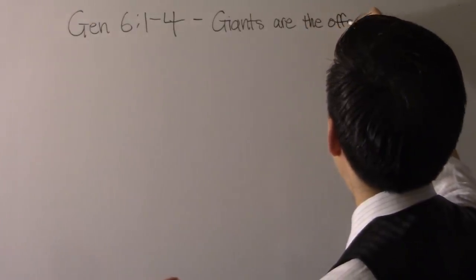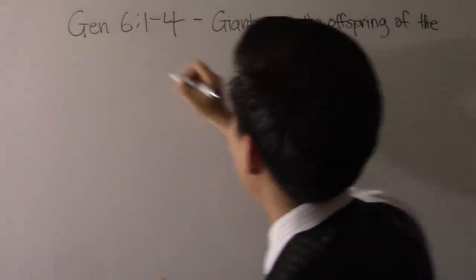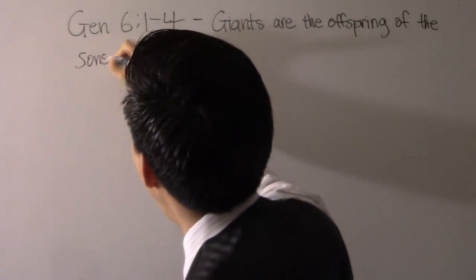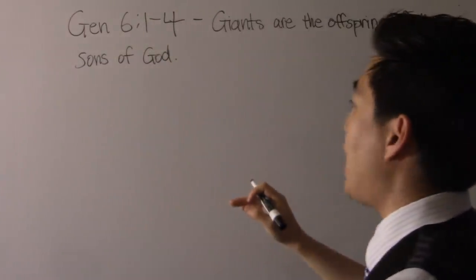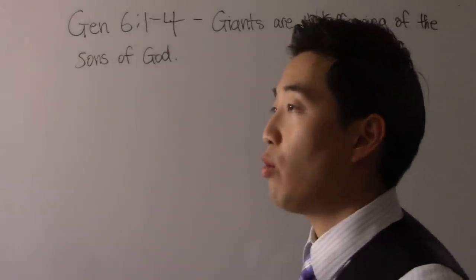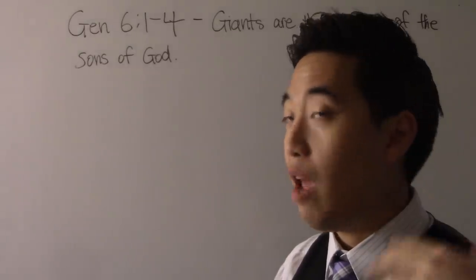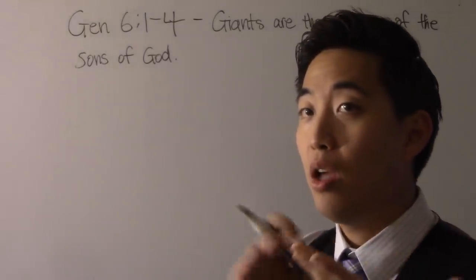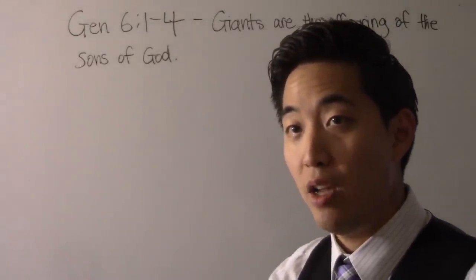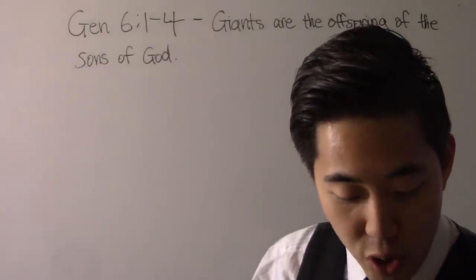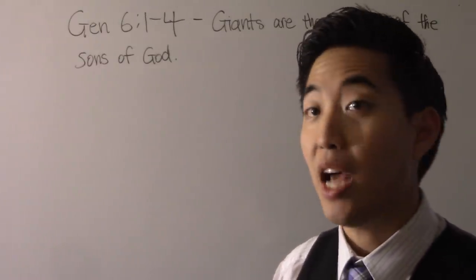But how they argue against that is, look at that verse again. It says there were giants in the earth in those days, and also after that. That phrase is the key. They mean giants were already there, they weren't the offspring of sons of God. And also after that, when the sons of God came in unto the daughters of men, they produced mighty men, not giants.